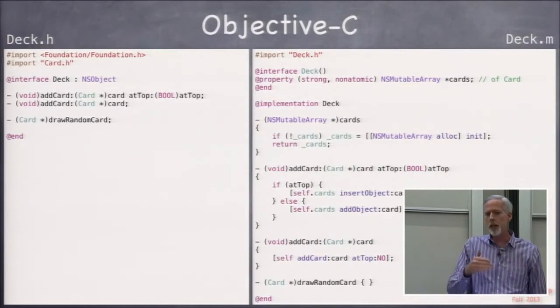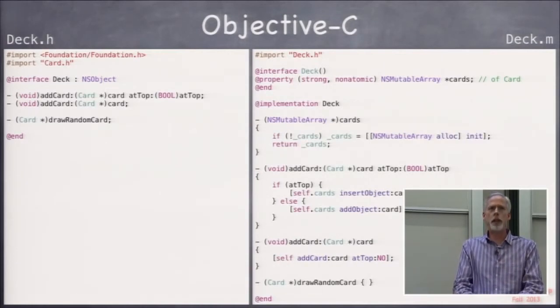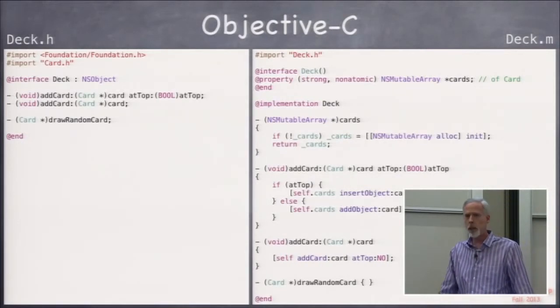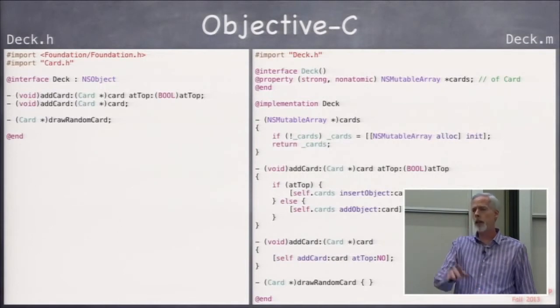That's a very good question, and we'll see init in a couple slides. This way we're guaranteed self.cards is never nil. What is the underscore?